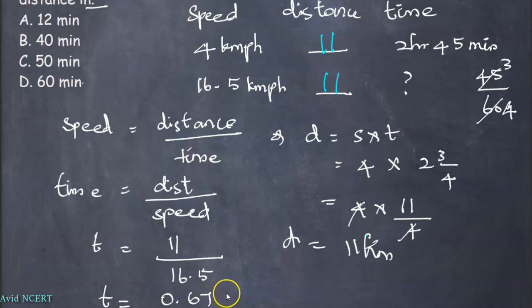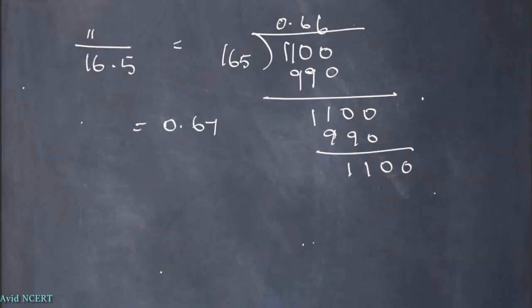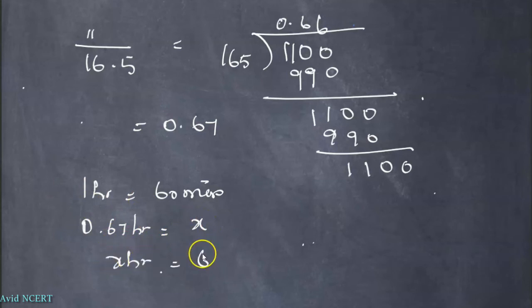So the answer we have got here is t equals 0.67, and this is in hours. This has to be converted into minutes. To convert into minutes: for 1 hour it is 60 minutes, here it is 0.67 hours, so this has to be converted to minutes, which is x equals 60 into 0.67.